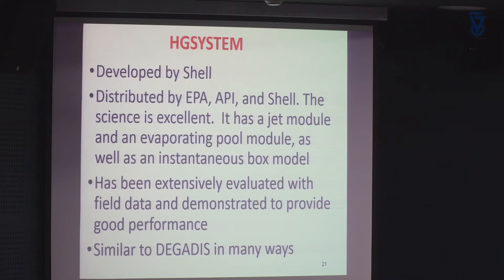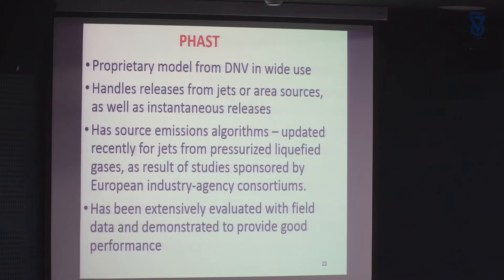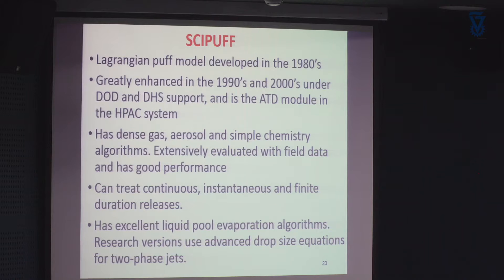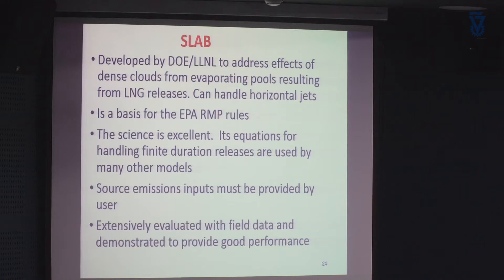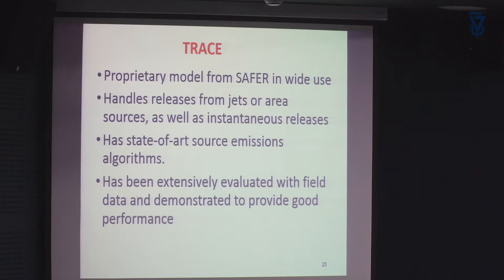The next model was developed by Shell — the HG System. It has good science: jets, evaporating pools, extensively evaluated. It's similar to Tom Spicer's model, DEGADIS, a simplified version of which is contained in the Aloha version. The FAST model is similar to HG System — the developer of HG System moved over to FAST — and it's widely used and greatly advanced. Ski Puff is similar to FAST. Slab is a Livermore model, quite old, similar to DEGADIS, and is the basis for the EPA RMP rules. TRACE is similar to FAST, a proprietary model and not as widely used as FAST.